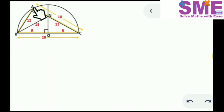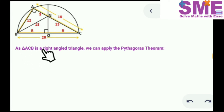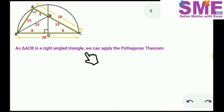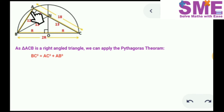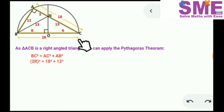Now let us focus on triangle ACB. This is a right angle triangle because angle BAC is 90 degrees, so we can apply Pythagoras theorem. BC is the hypotenuse, so BC² = AC² + AB². We can write BC = 2R, AC = 18, and AB = 12.